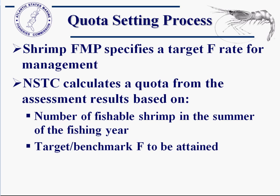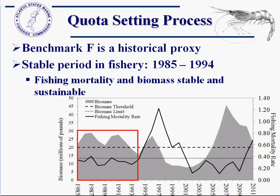The shrimp FMP specifies a target F for management — we want to meet this F rate. We want to take a certain proportion of the population every year that we think is sustainable but also gives a good harvest for the fishery. We calculate a quota based on this rate from the assessment results. We need the number of fishable shrimp in the summer before the fishing year starts, and then the target benchmark F to be attained — both of which come out of the assessment model.